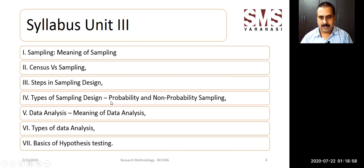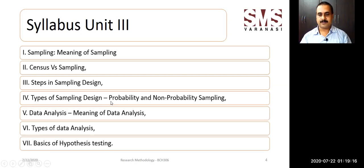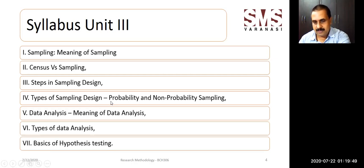Long answer type questions are asked from probability and non-probability sampling every year. The steps in sampling design, census versus sampling, meaning of sampling, meaning of data analysis, types of data analysis, and basic hypothesis testing are all important but are likely to be asked as short answer type questions. Two very important topics coming out of this unit are steps in sampling design and types of sampling design, which we are going to cover in much detail.